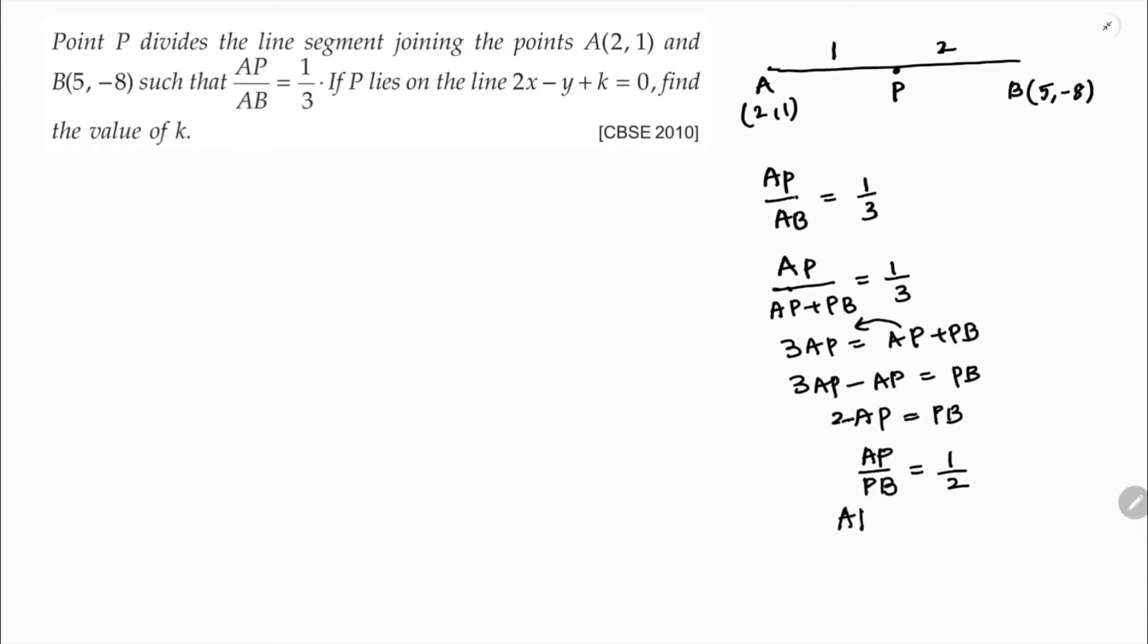If I write AP by PB equals 1 by 2, so the ratio is 1 is to 2, and the points A is 2 comma 1 and B is 5 comma minus 8.